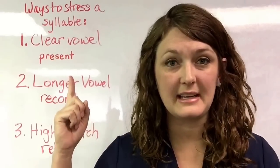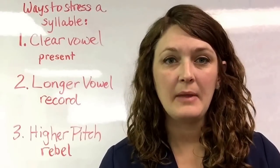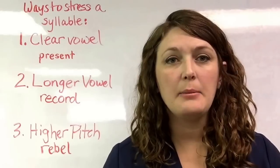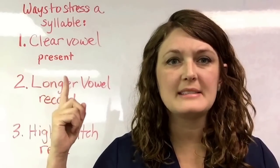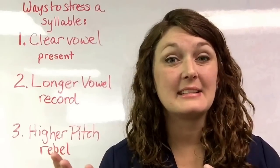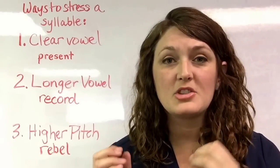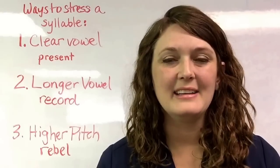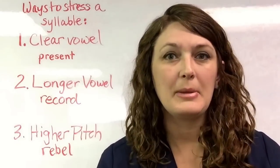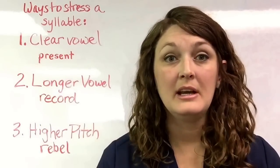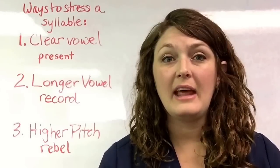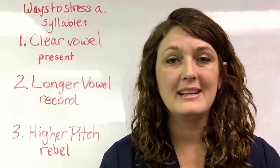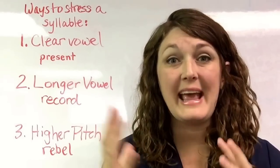The first syllable is really clear — 'eh.' With 'record' as a noun, the first vowel is really clear. However, when you switch to the verb form — present — the 'e' in the second syllable is really strong and very clear. It's the clear short 'e' sound, not a reduced vowel. Present. And notice that in the verb form, the first syllable's vowel becomes unclear — it reduces to a schwa sound. Present.